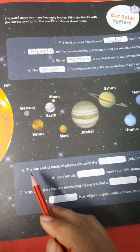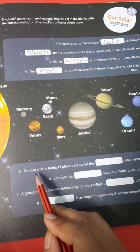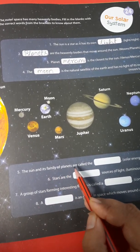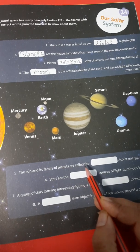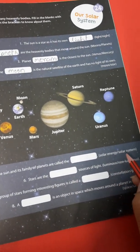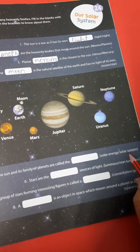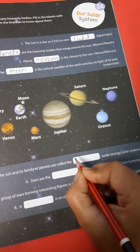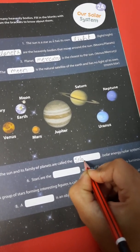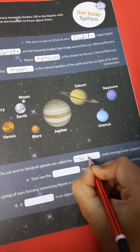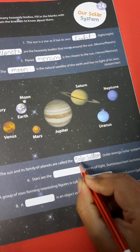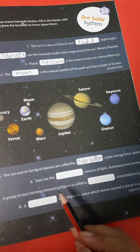Number 5. The sun and its family of planets are called the dash. Solar energy or solar system? It's solar system. You write here: S-O-L-A-R S-Y-S-T-E-M. Solar system.